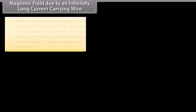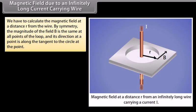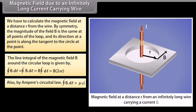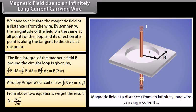Magnetic field due to an infinitely long current carrying wire: we calculate the magnetic field at a distance R from the wire. By symmetry, the magnitude of the field B is the same at all points of the loop, and its direction at any point is along the tangent to the circle. The line integral of B around the circular loop equals B times 2πR. By Ampere's Circuital Law, this gives B = μ₀I / (2πR).